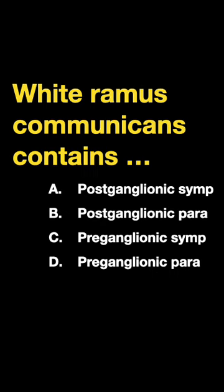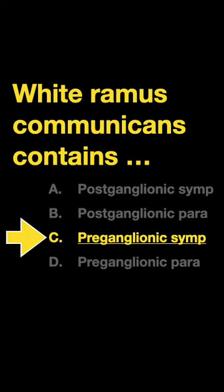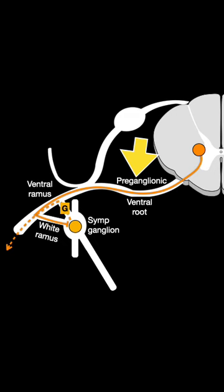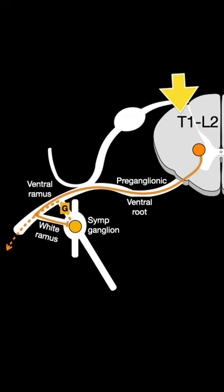The white ramus communicans contains what? It is the preganglionic sympathetic neurons. So here's a preganglionic sympathetic neuron entering through the white ramus communicans, synapsing in the sympathetic ganglion and exiting the gray ramus. That's a preganglionic neuron in the T1 to L2 levels.